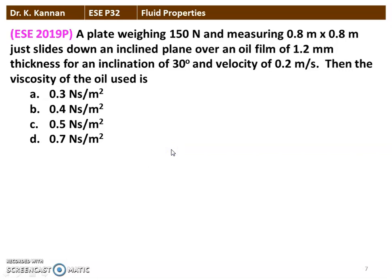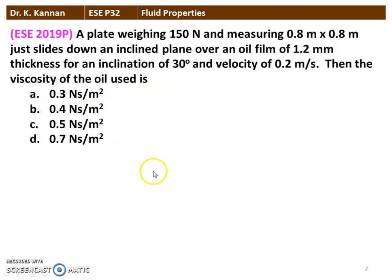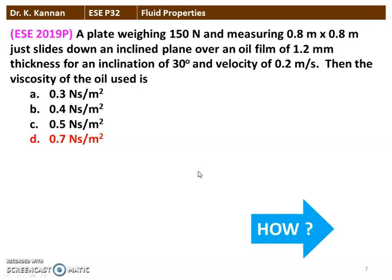The next question from the 2019 question paper: A plate weighing 150 Newton and measuring 0.8 m × 0.8 m just slides down on an inclined plane over an oil film of 1.2 millimeter thickness, for an inclination of 30 degrees and velocity of 0.2 meters per second. What is the viscosity of the oil used? The correct answer is 0.7 Newton-second per meter square. We will see how in the next slide.